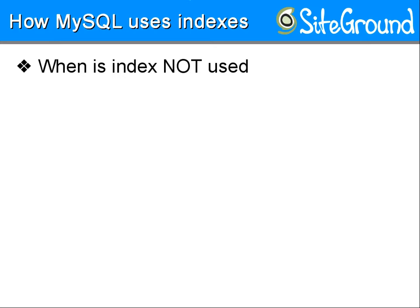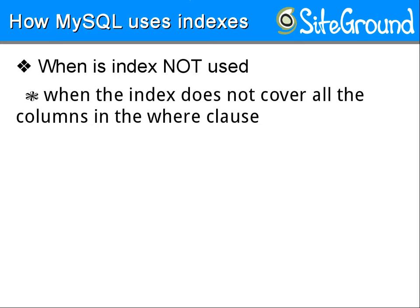MySQL uses indexes most of the time, but there are cases when it cannot. If you have five columns and create a single index for each, MySQL uses only one index per query. It tries to find the best index out of the five. But if you have a WHERE clause spanning three columns, it won't combine three single-column indexes — it needs a single composite index covering all three columns. This is something most people don't understand initially.